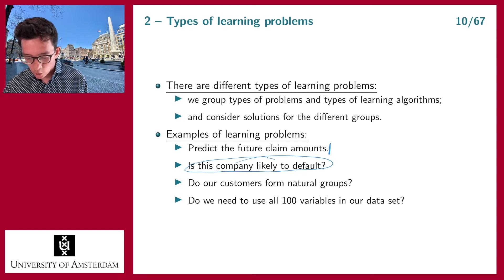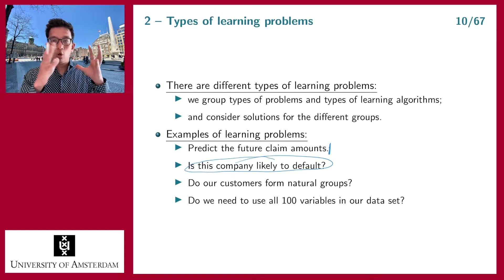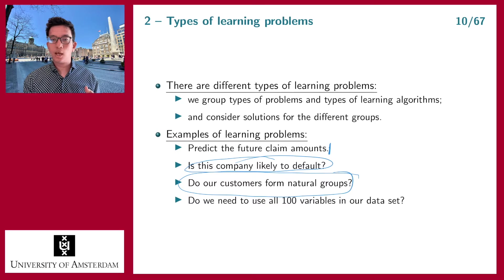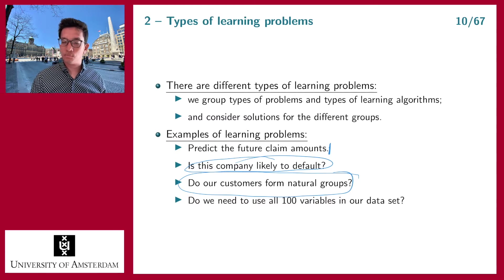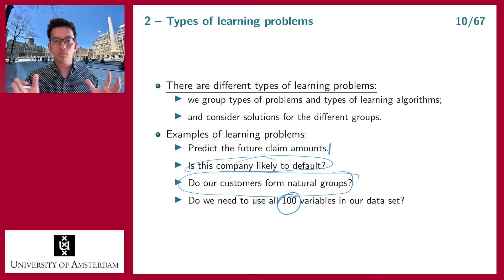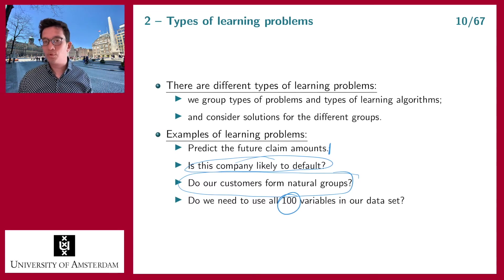Another problem could be that you are looking at all your customers in your portfolio and you want to see if they form natural groups. If your customers are clustering together in several clusters, you can start investigating each cluster to see if behavior differs between them. Or it could be that you have a very large dataset of 100 variables and you're trying to understand if you can remove some of the variables — making the dataset smaller, using only 60 variables, while still retaining enough information to make predictions.